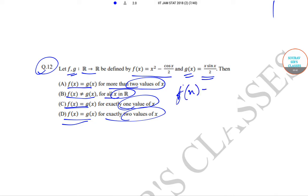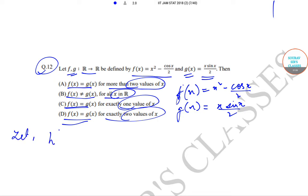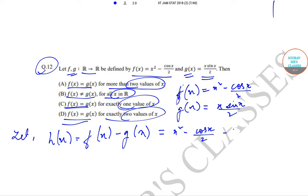So we have f(x) = x² - cos(x/2) and g(x) = x·sin(x/2). Let h(x) be defined as f(x) - g(x), which gives us x² - cos(x/2) - x·sin(x/2).